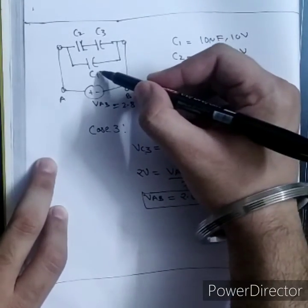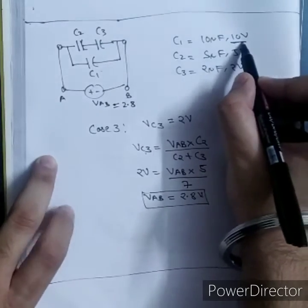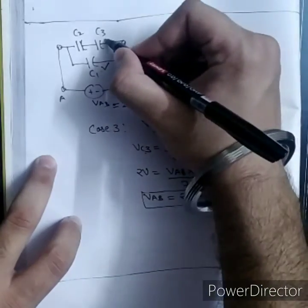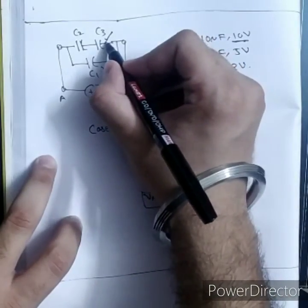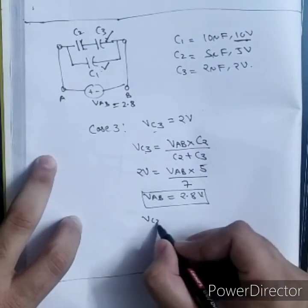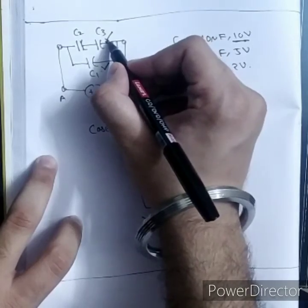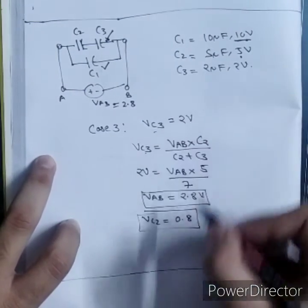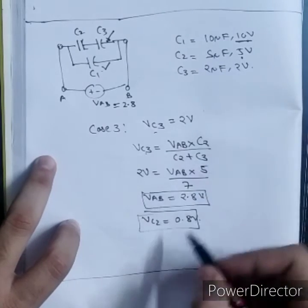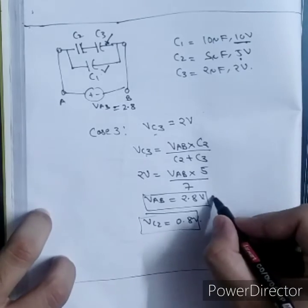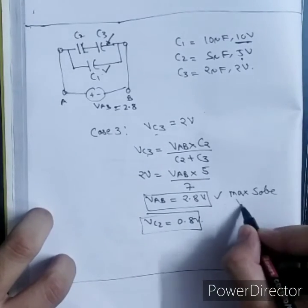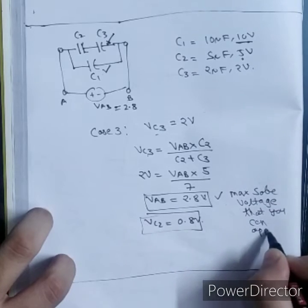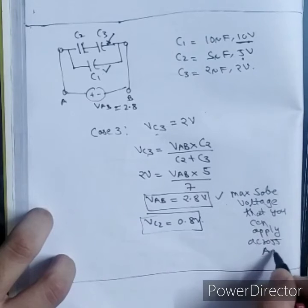I got VAB as 2.8V by using case number 3. If I apply 2.8V across C1, my C1 will not go to breakdown because it can have maximum up to 10V. C1 will not go to breakdown. If I am having VAB as 2.8V, we have assumed VC3 to be 2V, so this does not go to breakdown. If 2V across this and total is 2.8V, across VC2 will be 0.8V. 2V is dropping across this, so rest 0.8V will drop across this. VC2 is 0.8V and maximum it can have is 5V, so C2 will also not go to breakdown. This is the max safe voltage that you can apply across A and B.